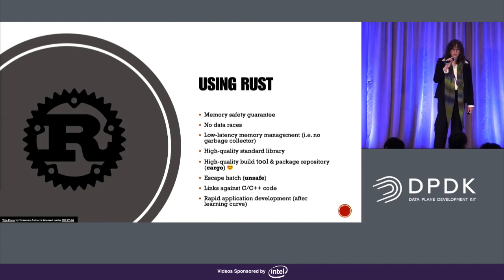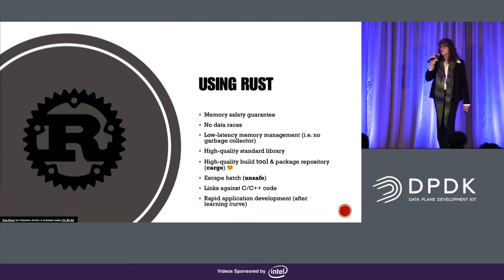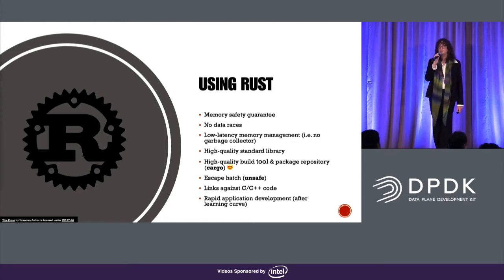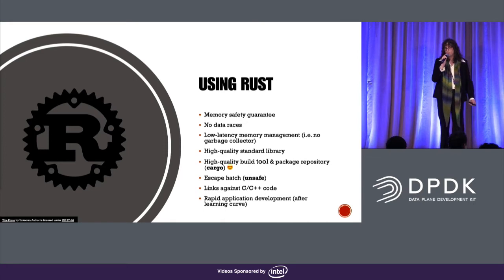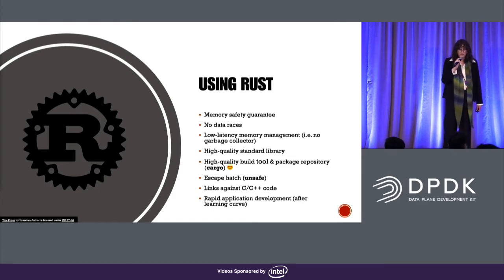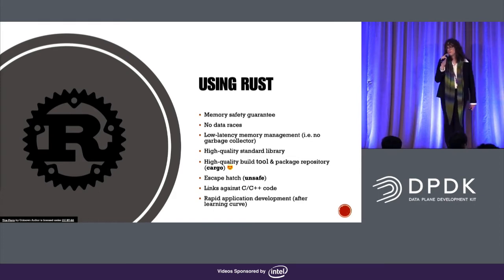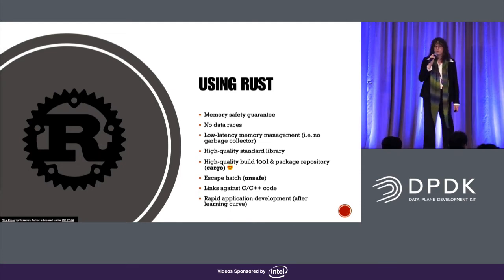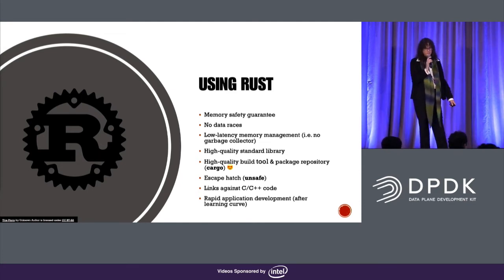You can link Rust against C++ code, and that means if you've got an existing system, you can take a portion of it and rewrite it in Rust incrementally. Rust also provides an escape hatch — if we find that Rust doesn't do what we need it to, we can switch to the unsafe dialect and do things we'd normally need C or C++ for. And Rust also provides rapid application development. There is a learning curve, but once you're over it, you move much more quickly.